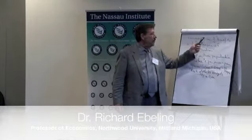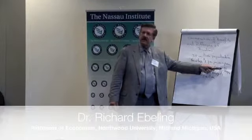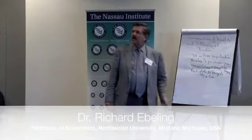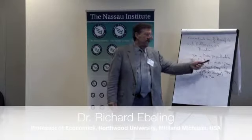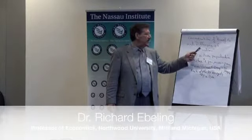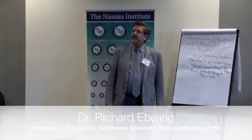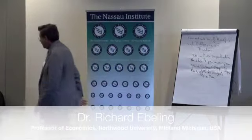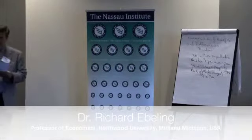So the bias, the skewed prejudice, is towards the special interest group for whom the benefit is concentrated, and less of an incentive or motive for those who will bear the burden, all the members of the society, because the burden is diffused among them.